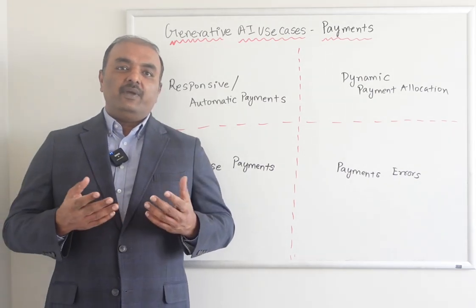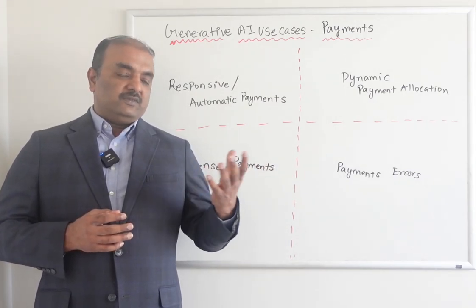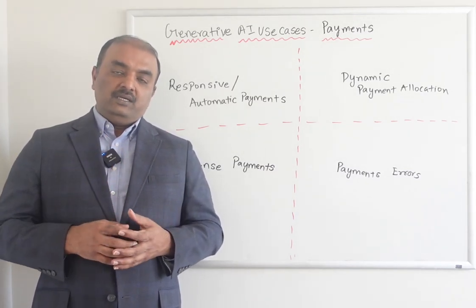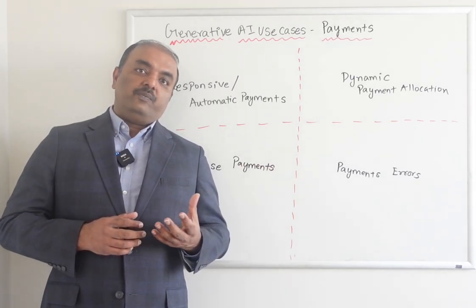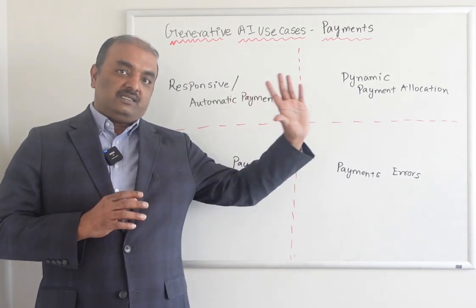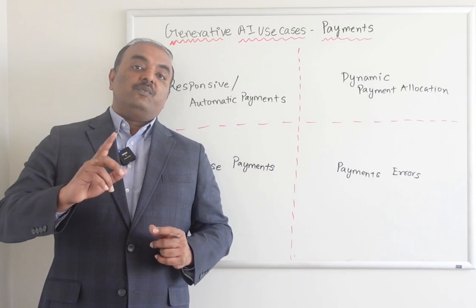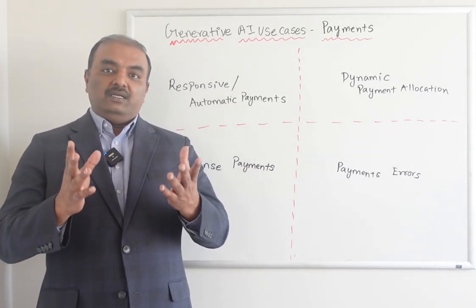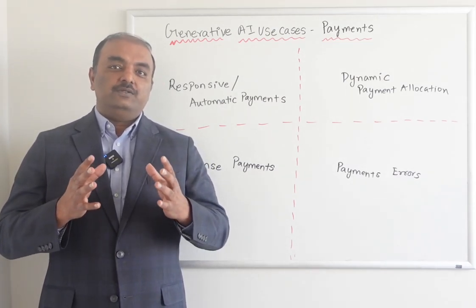Payment errors — you make a payment and for some reason you don't have enough balance in the customer account, the payment gets bounced, and you have to reprocess the payment. In those scenarios, AI can definitely help because it has historical data on what the original payment was, and once AI reads the customer profile and knows the customer has enough bank balance, it can reprocess the payment immediately instead of somebody doing it manually. There are many use cases; I just wanted to touch upon some of the critical ones.